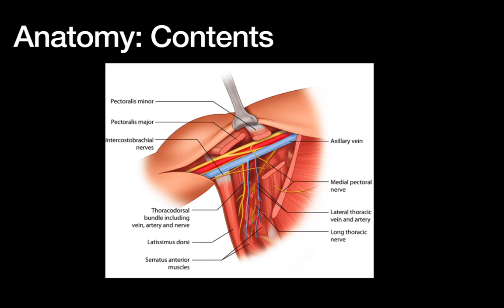It's important to know the deficits from injuring these nerves, as they commonly come up on exams. The classic question is injury to the long thoracic nerve, which causes weakness of the serratus anterior leading to winged scapula deformity. Injury to the thoracodorsal nerve causes loss of latissimus dorsi function, limiting shoulder adduction — bringing the arm in toward your side. The intercostal brachial causes minor arm numbness, and the medial pectoral nerve, located in the superior-medial section, innervates the pectoral muscles.